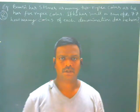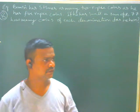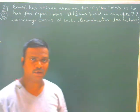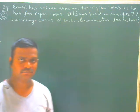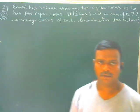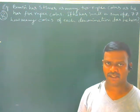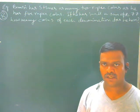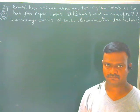Hi everyone, today I am going to explain about 8th class CBSE linear equations with one variable, example number 8. The question is: Bansi has 3 times as many 2-rupee coins as he has 5-rupee coins. If he has in all a sum of 77 rupees, how many coins of each denomination does he have?